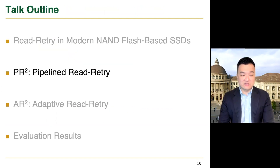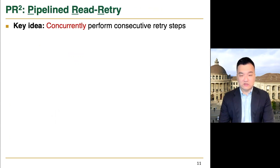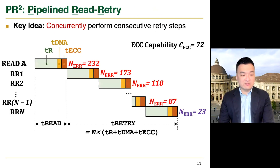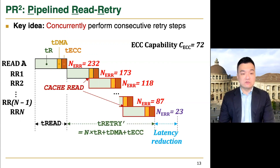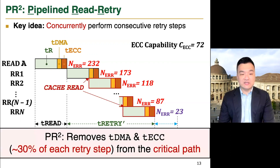Next, I will present our first technique. Our first key idea is to concurrently perform consecutive retry steps. Using the cache read command, PRS speculatively starts the next retry step as soon as the page sensing of the current retry step is finished. This idea is quite simple, but can significantly reduce the read retry latency by removing data transfer and ECC decoding from the critical path, which contributes almost 30% of the latency of each retry step.